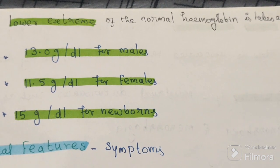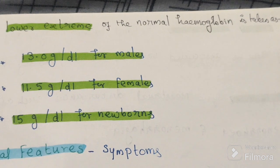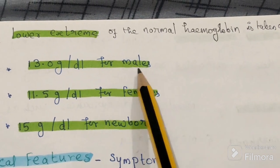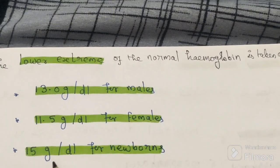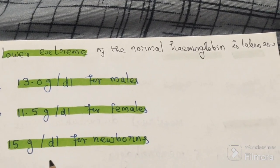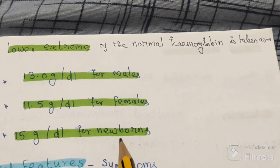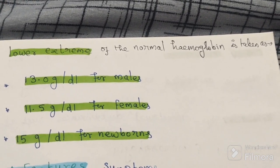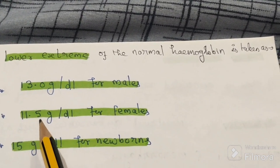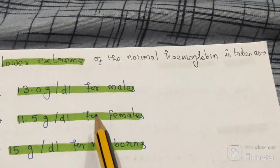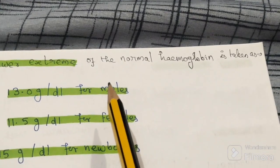The lower extreme of normal hemoglobin is taken as 13 grams per deciliter for males, 11.5 grams per deciliter for females, and 15 grams per deciliter for newborns. A level lower than 15 in newborns means anemia. In females, below 11.5 grams per deciliter means anemia. In males, below 13 grams per deciliter means they are affected by anemia.